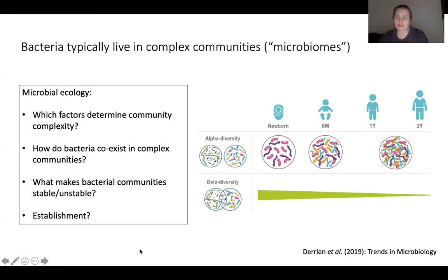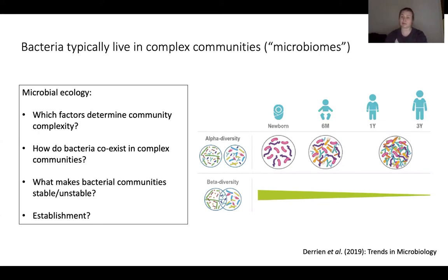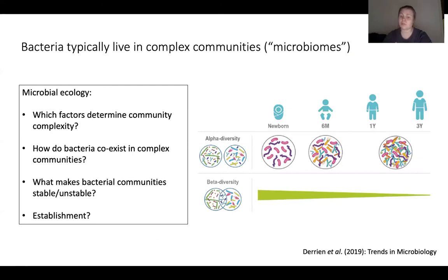Within the last couple of decades it's become apparent that most bacteria live in very complex communities with many different species, but we still know very little about the ecology of those communities. Why do some communities have more species than others? How do these species coexist — do they compete, collaborate, or both? What makes them stable over time, and how do they get established in the first place? This is particularly important for host-associated communities such as the gut microbiota, because we are not born with our gut bacteria — we have to acquire them, and it's very important that we get the right bacteria.